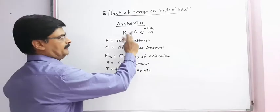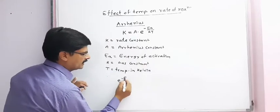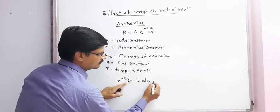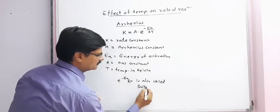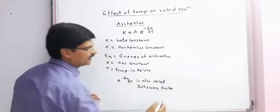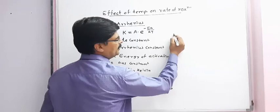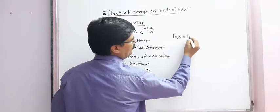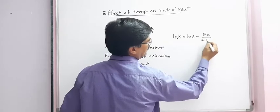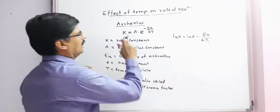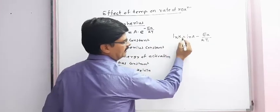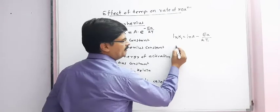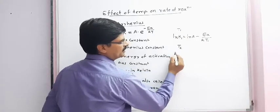The term e raised to minus Ea by RT is also known as the Boltzmann factor. For temperature T1, the Arrhenius equation is written as: ln k1 is equal to ln A minus Ea upon RT1.